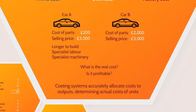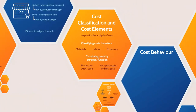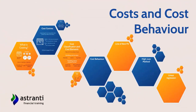Let's take a second and recap what we've covered so far. We've used the pie shop to understand the different cost centers in a business and the different ways we can classify costs. Then we moved on to look at a bigger company — a car manufacturer — which helped us understand the classification of cost by purpose, by function, and by element.